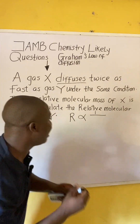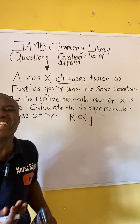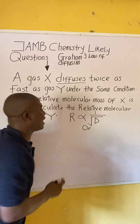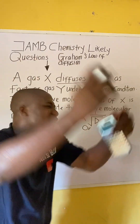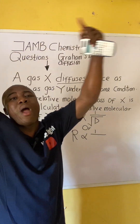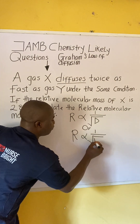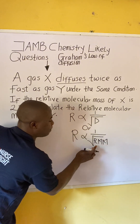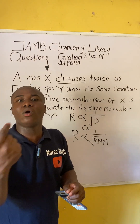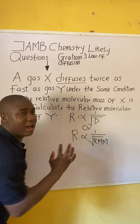There are two formulas you can derive from this law. The rate of diffusion of a gas is inversely proportional to the square root of its density, symbolized as D. Or, the rate of diffusion is inversely proportional to the square root of its relative molecular mass, abbreviated as RMM. Since this question mentions relative molecular mass, we will use that formula.